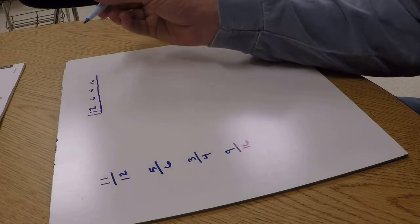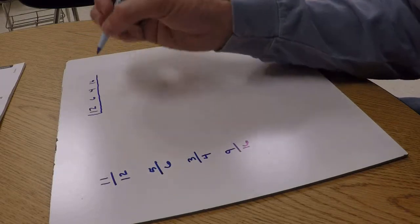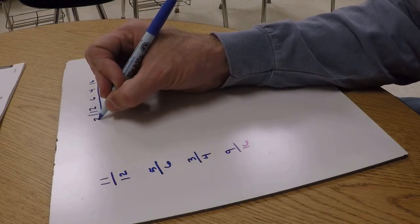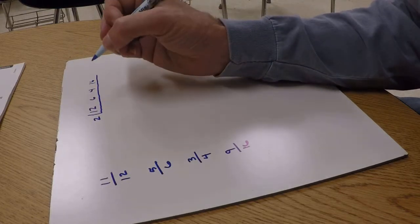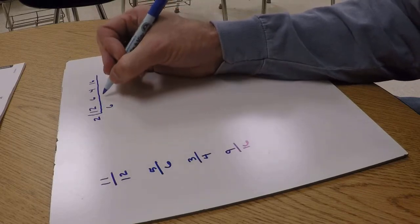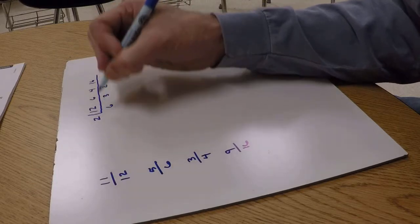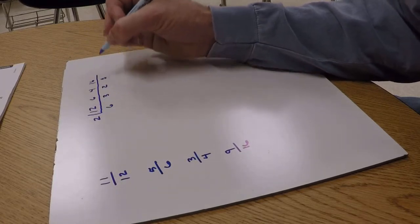So find a small prime number that will go into all four of those. 2 will go into all of those: 2 into 12 is 6, 2 into 6 is 3, 2 into 4 is 2, 2 into 16 is 8.